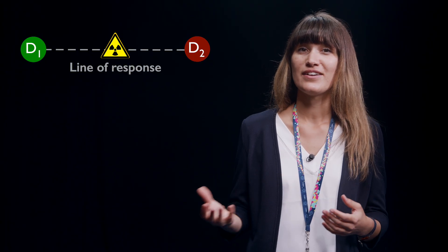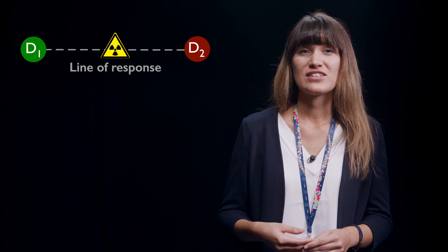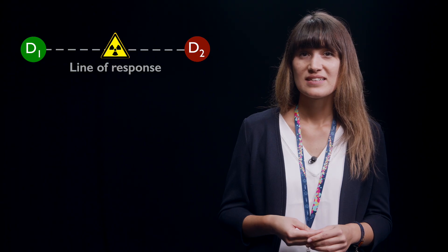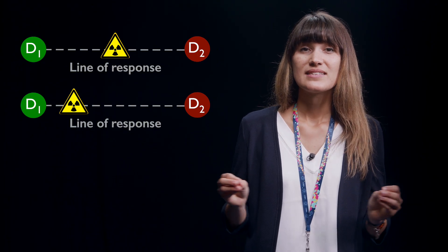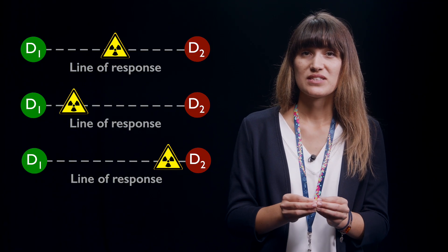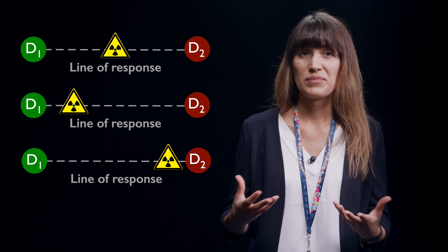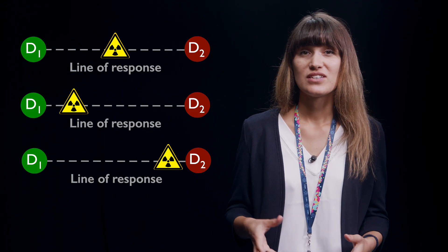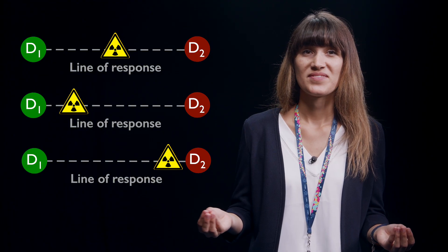Did your prediction match the explanation? Well done! And one more important thing: the line along which the two created photons move in opposite directions is called the line of response. When two detectors measure two photons in coincidence, we know that somewhere between them, somewhere along this line of response, annihilation of positron and electron and creation of two photons might have happened. But we do not know where exactly along this line of response. You will need this information in the next section, in which you will use coincidence measurements to locate a positron source in our virtual patient, like in a real PET scan.